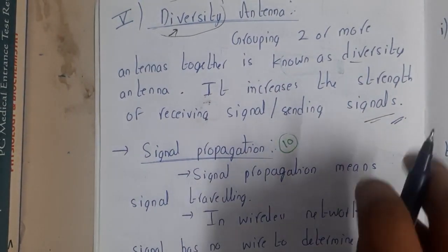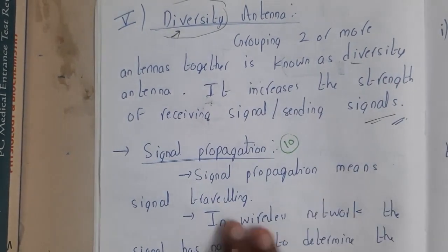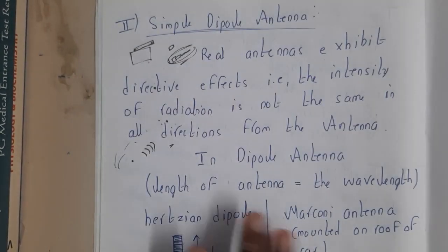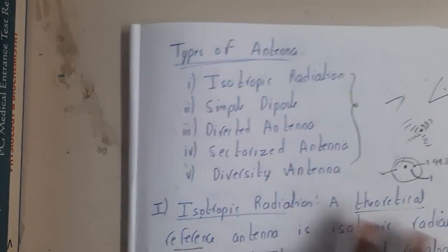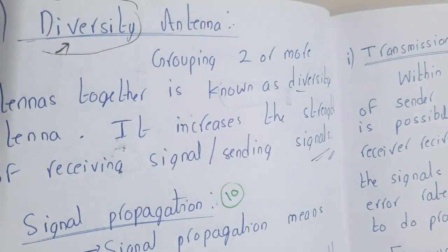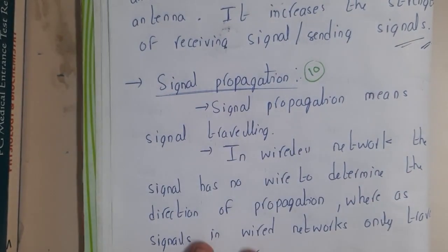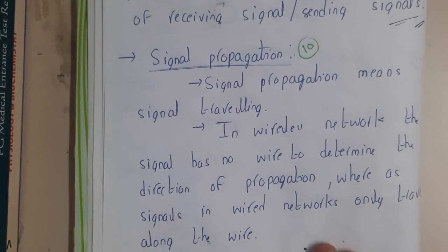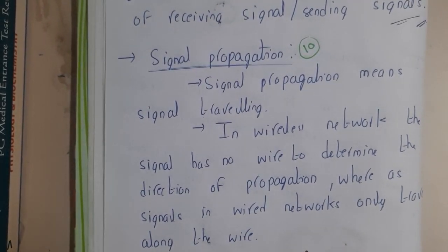So we discussed three types in this lecture and the previous two types in the last lecture, so we are now clear with all five types of antennas. In the next lecture we will be discussing signal propagation. Thank you for watching.